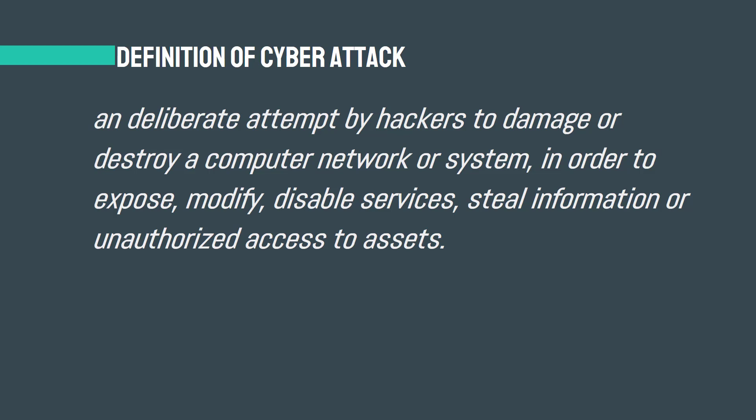In this definition I want to highlight some interesting points. Expose of data or information refers to a data breach — exactly something I presented about the H&M database breach in the previous video. Disable services relates to the story of the Jeep Cherokee that we saw together, and unauthorized access refers to the data breach in Facebook. All the examples from the previous video can be seen in this definition, so protecting assets from breaching and unauthorized access and ensuring integrity is a must in the cyber security industry.